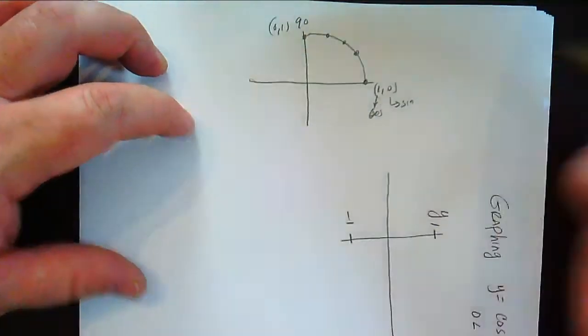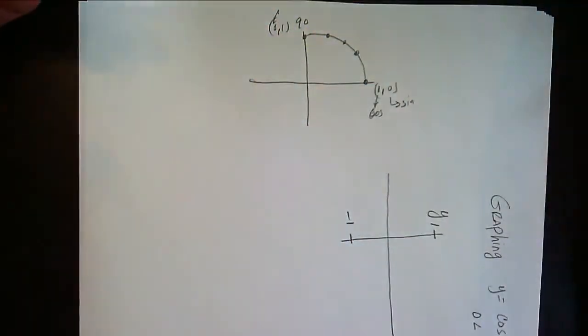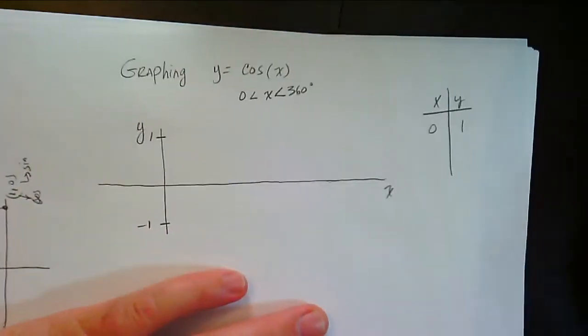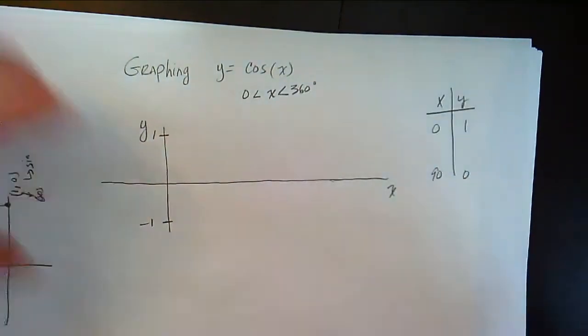So the cosine of 0 is 1 and the cosine of 90 is 0, do you see? So the cosine of 0 degrees is 1 and the cosine of 90 is 0. So check this out.